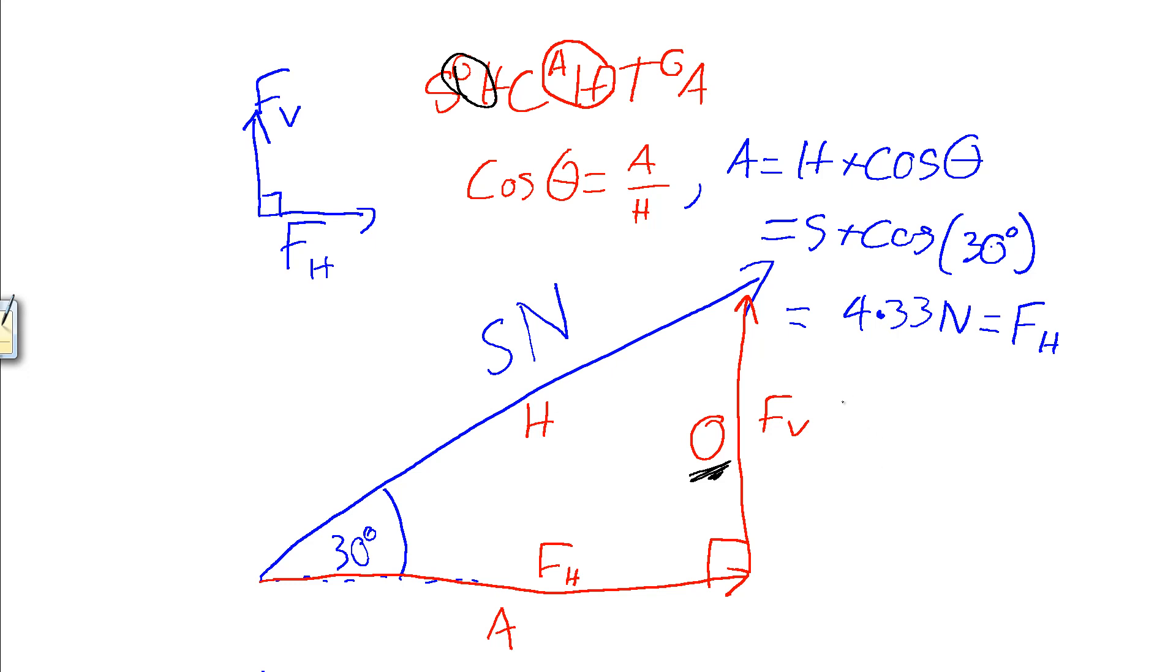So, this time, after we've rearranged it, just as we did up here, we will end up with the opposite side, our vertical, is H sine of our theta. And so, five times the sine of our thirty degrees, which nicely comes out as exactly 2.5 newtons.